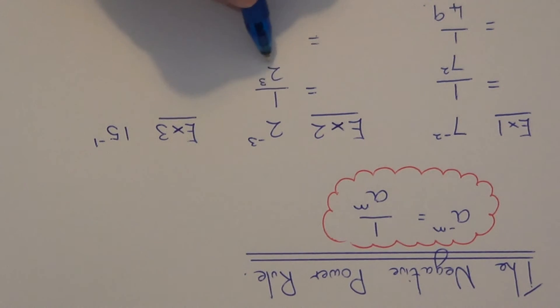So finally just work out 2 cubed. So 2 cubed is 8. So you get the final answer of 1 eighth.